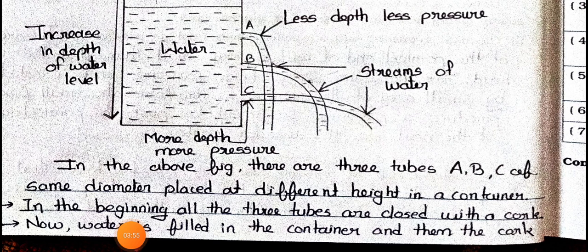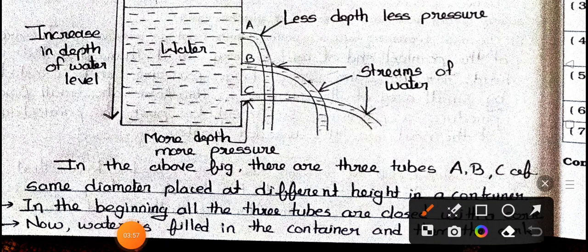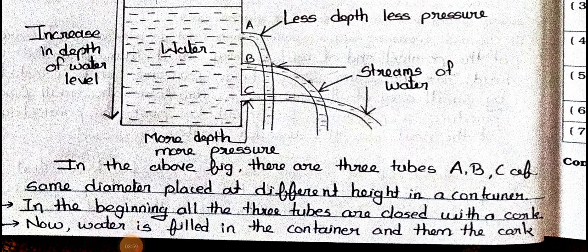Now see the answer: In the above figure, there are three tubes A, B, C of the same diameter, placed at different heights in a container. In the beginning, all three tubes are closed with a cork. Now water is filled in the container, and then the cork